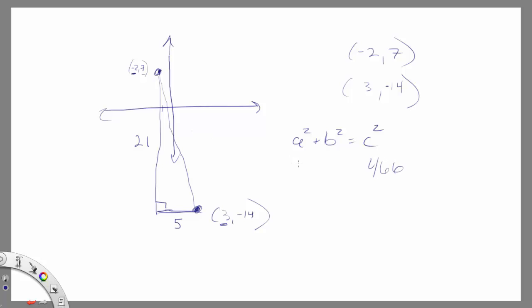So let's do that. 21 times 21 is 441, 5 times 5 is 25, so 441 + 25 is 466. So c² would be 466. a² we said is 441, b² is 25, that equals 466 = c². So c² = 466, c itself will be the square root of 466.